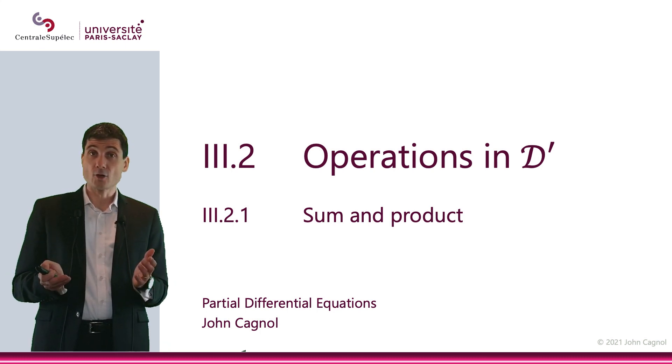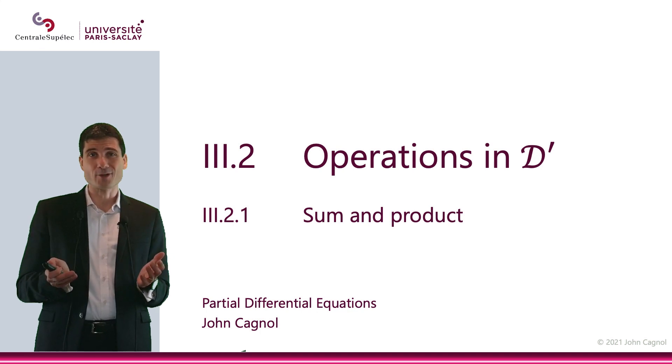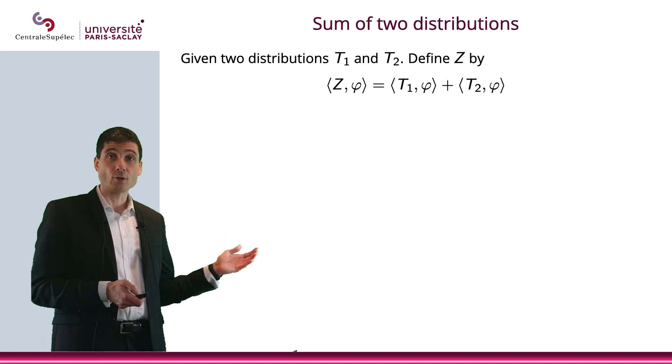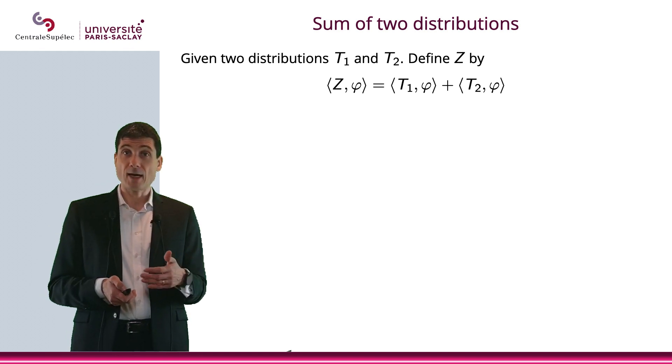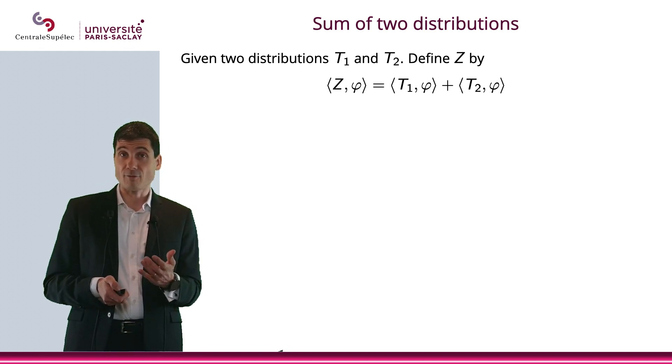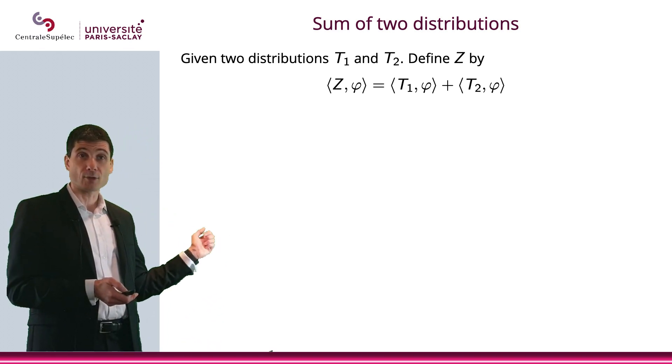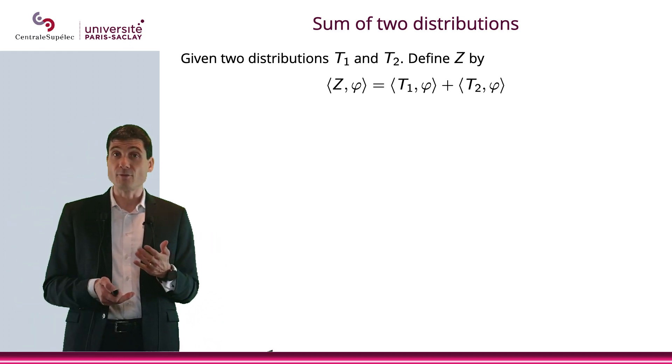We're going to start with a very simple operation, plus. Let me consider T1 and T2, two distributions, and I will define Z as the application from D to R defined as Z(φ) equals T1(φ) plus T2(φ).